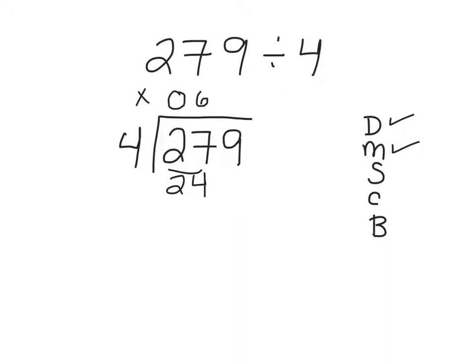We multiply, we're going to subtract, we're going to check. Is our subtraction answer of 3 smaller than our divisor? It is, so we're good to go. Now we're going to bring down our 9, bring it straight down, and we're going to do our division now.